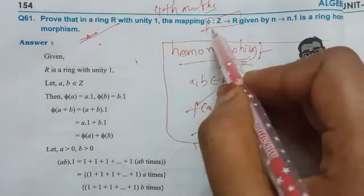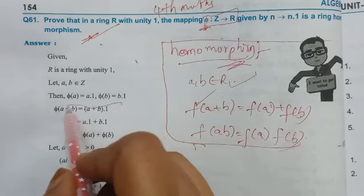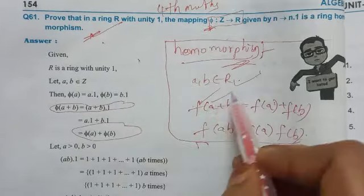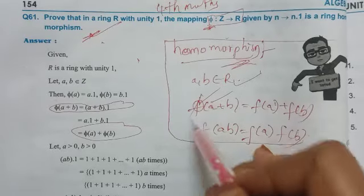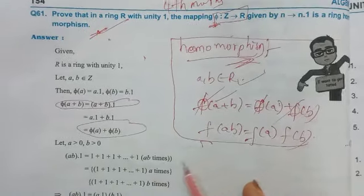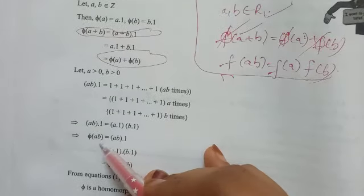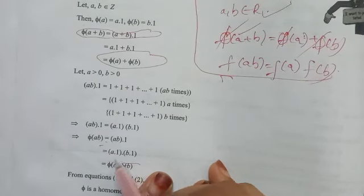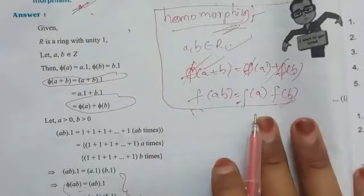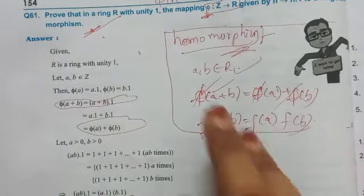Here we have the phi function. So first we will prove phi of (a plus b) equals phi of a plus phi of b. Second, phi of ab equals phi of a times phi of b. So we need to show these two conditions to show ring homomorphism.